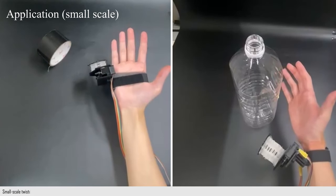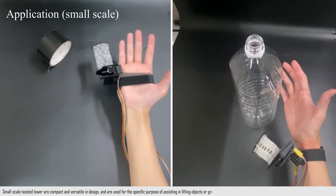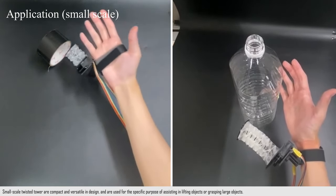Small-scale twisted towers are compact and versatile in design, and are used for the specific purpose of assisting in lifting objects or grasping large objects.